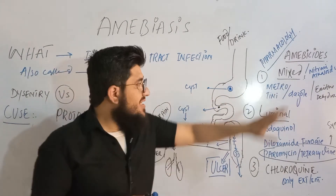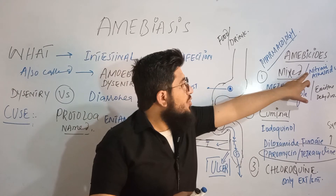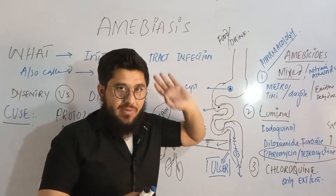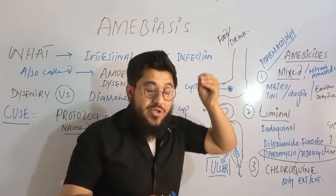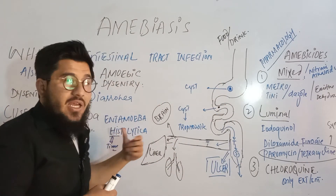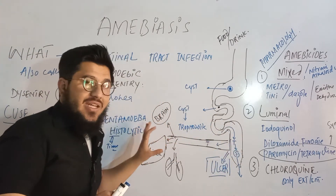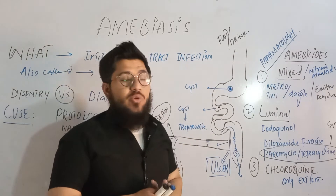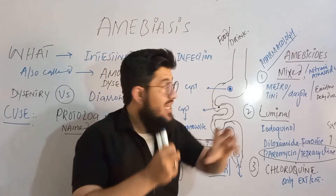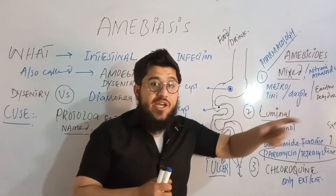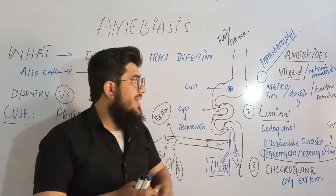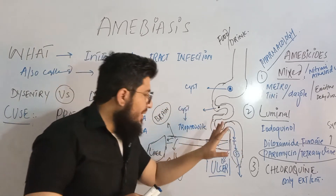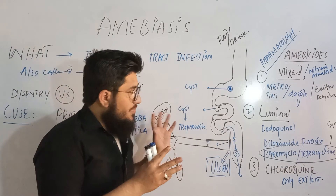In the mixed class, we have nitroimidazoles and alkaloids. Under nitroimidazoles, we have metronidazole, tinidazole, and other nitroimidazoles. These are responsible for killing Entamoeba histolytica both in the intestine and in extra-intestinal regions. In the same mixed group, we have alkaloids derived from plants: emetine and dehydroemetine. These drugs also destroy or kill trophozoites whether in the intestine or in extra-intestinal regions.